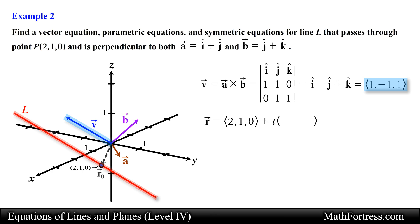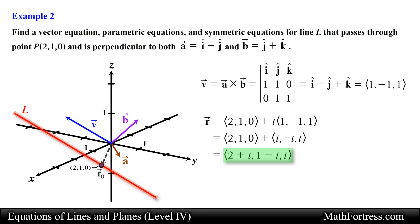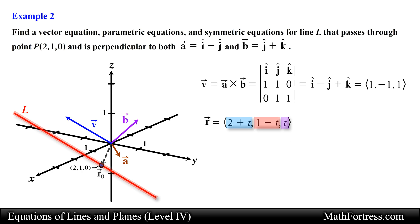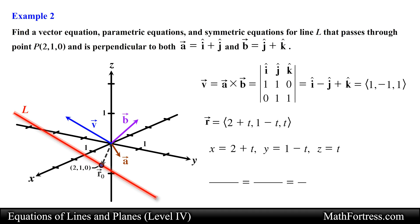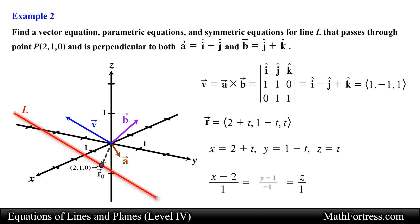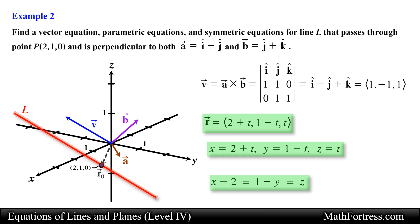We substitute this direction vector into our equation, then distribute the parameter t and add the vectors component-wise, obtaining the vector equation in component form and equivalent unit vector form. The parametric equations are obtained by separating each component. The symmetric form is obtained by solving for parameter t in each parametric equation and equating them. We can also rewrite the middle equation by distributing the negative sign to each term in the numerator. This is our final answer.